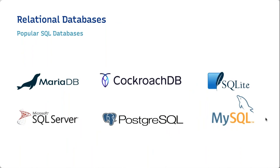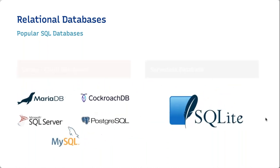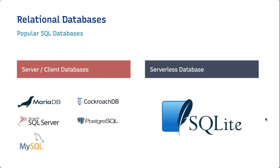There are various popular relational databases you'll likely encounter in projects: MariaDB, Microsoft SQL Server, CockroachDB — a highly fault-tolerant SQL database — and SQLite. One of the biggest differences among popular databases is that most are a client-server database system, whereas SQLite is a serverless database system, and that's what makes it really interesting and important.